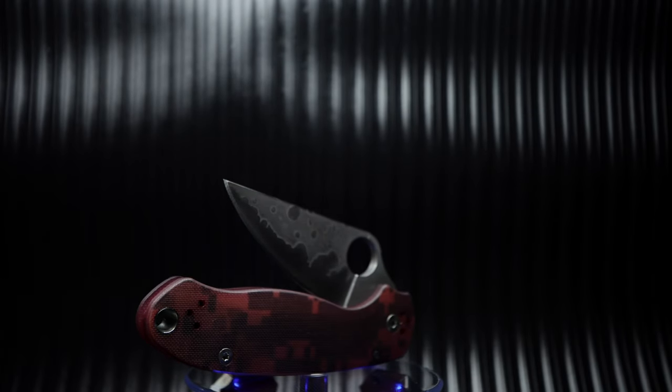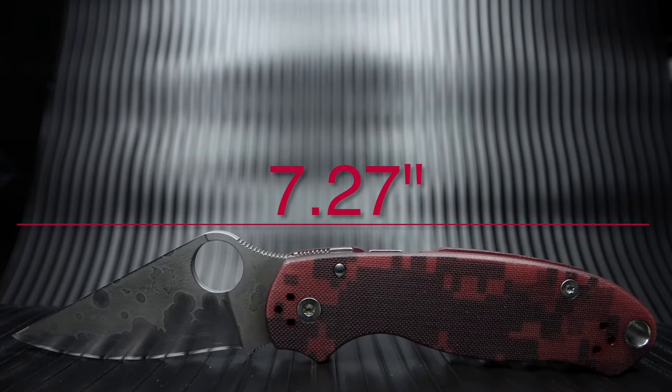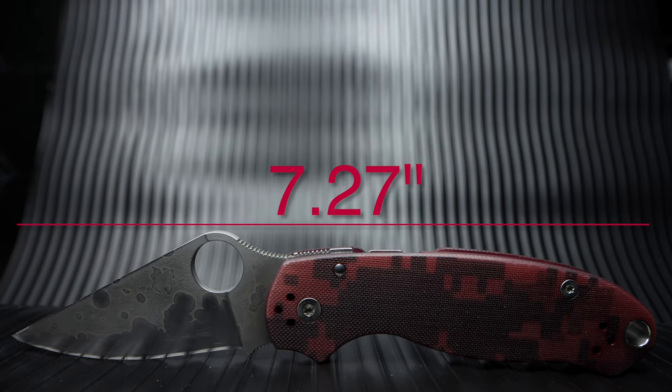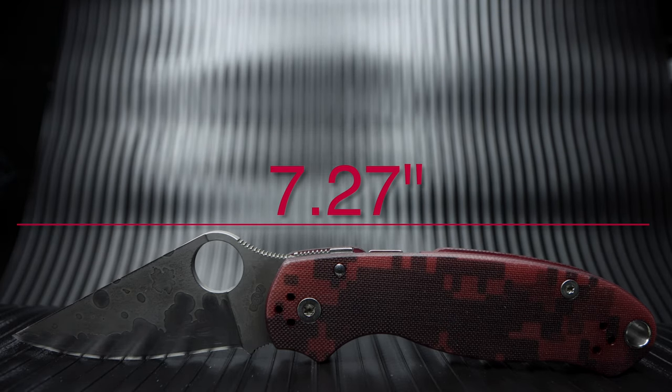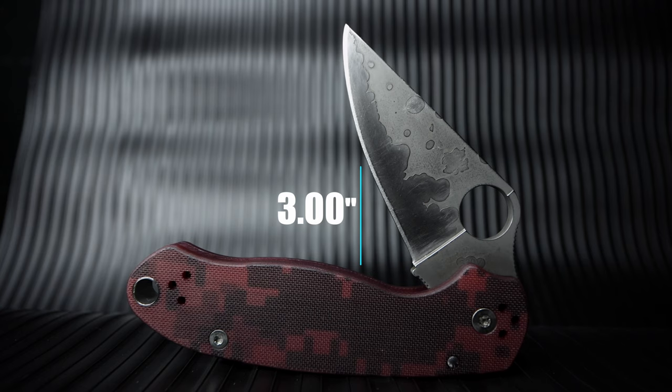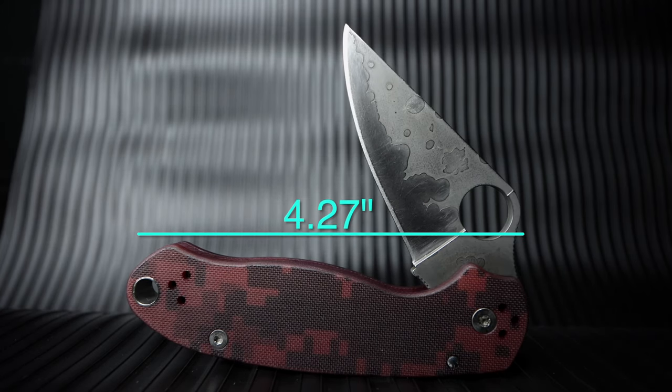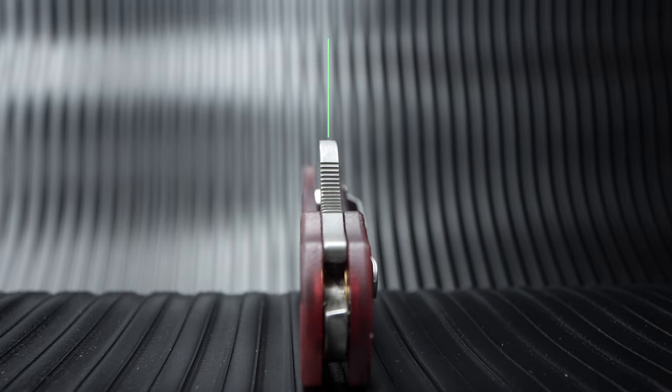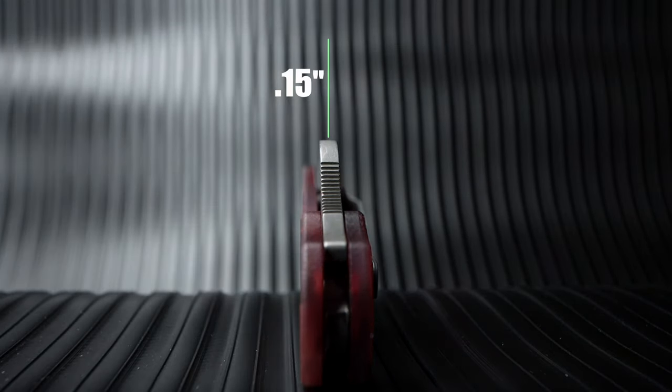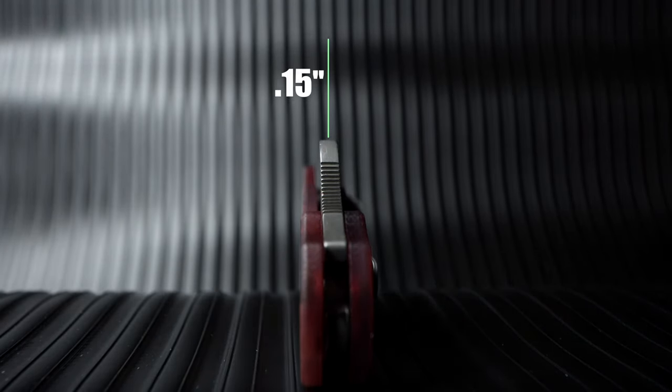Let's start with the specs on the Para 3. My Para 3, the G10 original model, comes in with an overall length of 7.27 inches. The blade length is three inches with a cutting edge of 2.5 inches. The handle length is 4.27 inches with a thickness of 0.45 of an inch and a blade thickness of 0.15 of an inch.